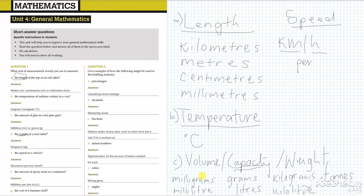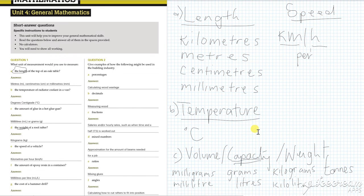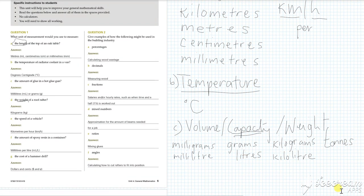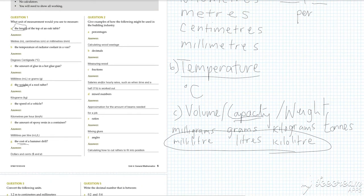As we then go down, the amount of epoxy resin. So resin is a liquid, so we would measure that in liters. Then we have the cost of a hammer drill. Because we're looking at cost, that's money, so it's dollars and cents. And that's question one done.